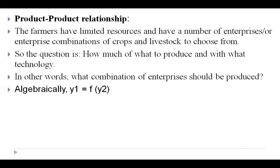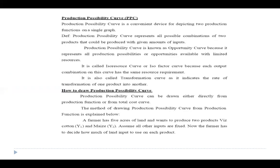The question is: how much of what to produce, and with what technology? In other words, what combination of enterprises should be produced? Algebraically, we study the relationship between two products where y is the symbol for product and x is the symbol for factor (input). So y1 is equal to a function of y2 — this is the relationship we study in the product-product relationship.